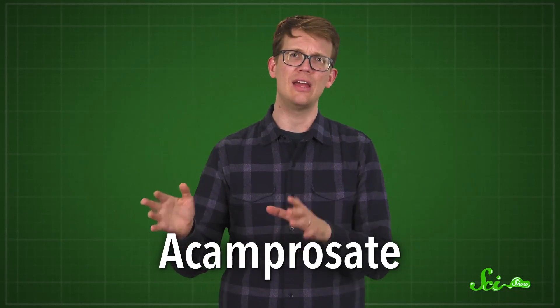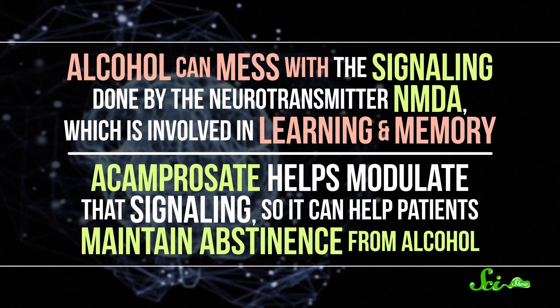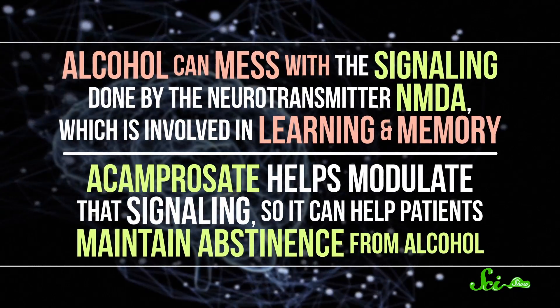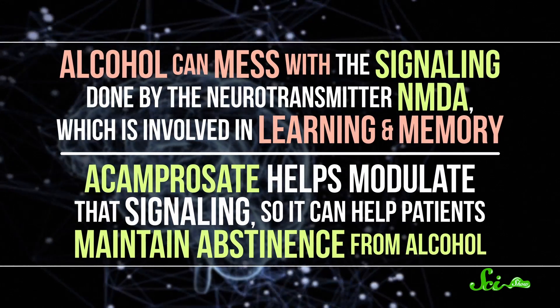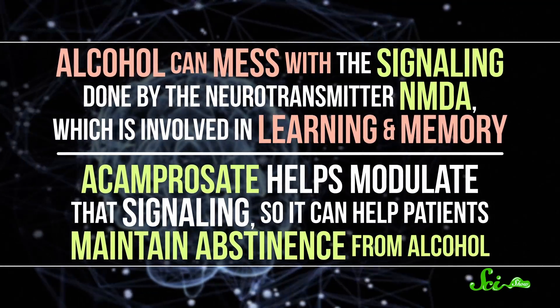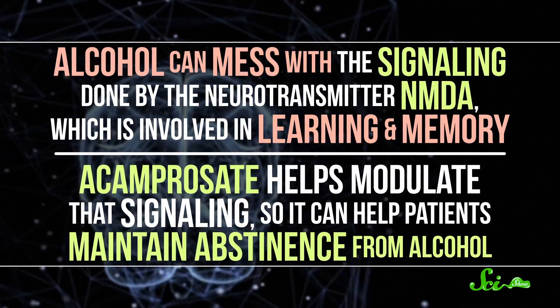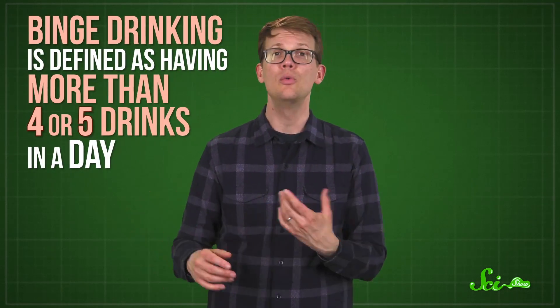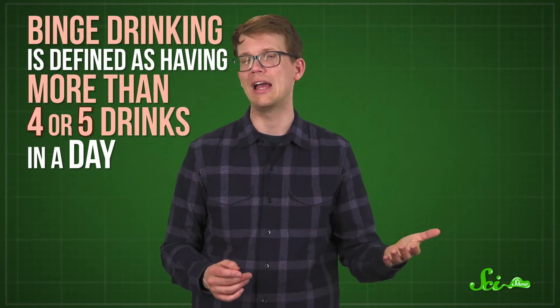AUD isn't just about the cravings, though. Chronic alcohol use and dependence also produce a host of changes in the brain, and acamprosate aims to change them back. For example, alcohol can mess with the signaling done by the neurotransmitter NMDA, which is involved in learning and memory. Acamprosate helps modulate that signaling so it can help patients maintain abstinence from alcohol. Studies show it helps people avoid taking up drinking again, although it doesn't prevent a return to binge drinking in particular, which is defined as having more than four or five drinks in a day.